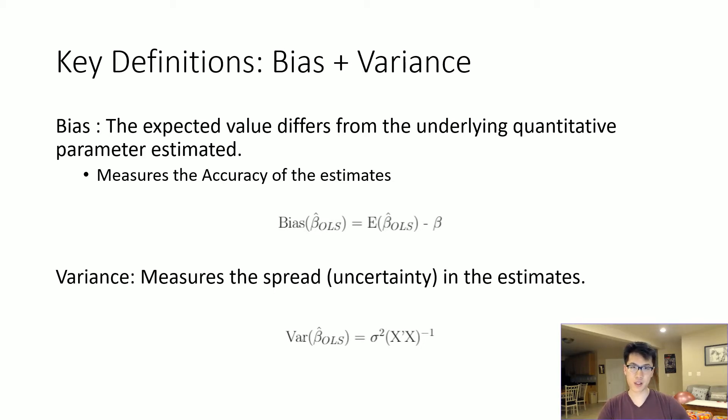The first is bias. It's the expected value that differs from the underlying quantitative parameter being estimated, and it measures the accuracy of estimates. In this equation, the bias of beta hat OLS equals the expected value of estimated beta values minus the true value.